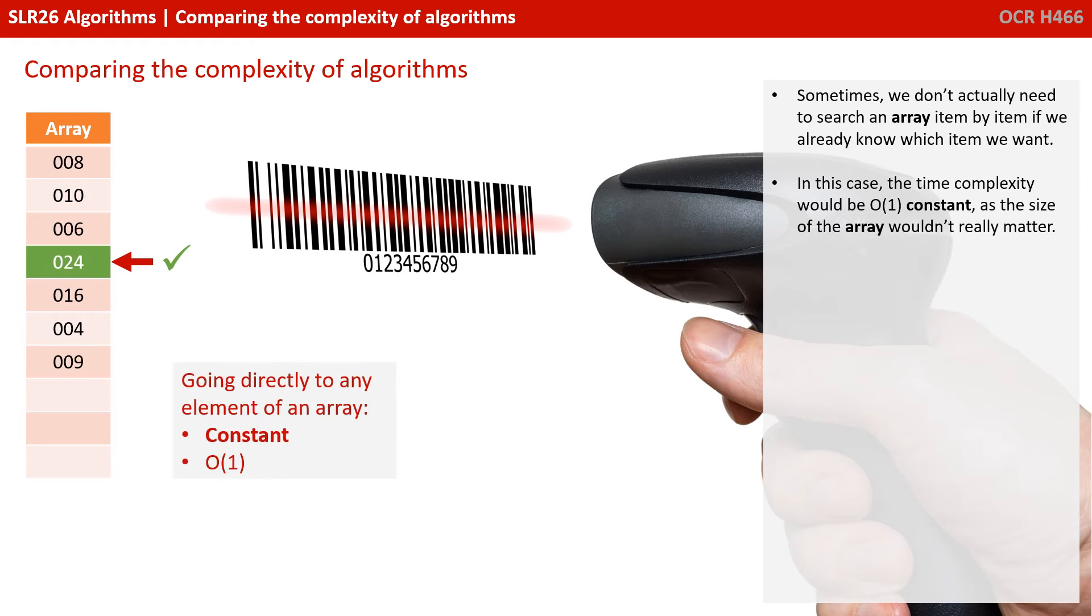Sometimes we don't actually need to search an array item by item if we already know which item we want. In this case, the time complexity would once again be O(1), constant, as the size of the array again wouldn't really matter.